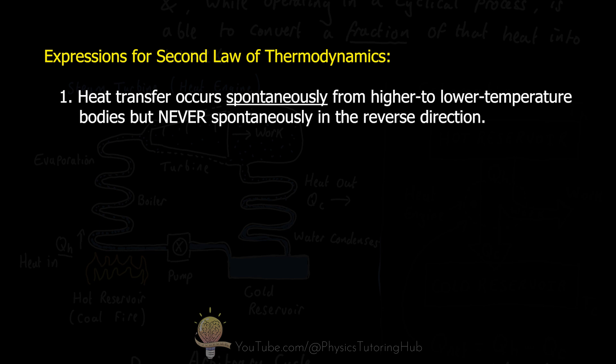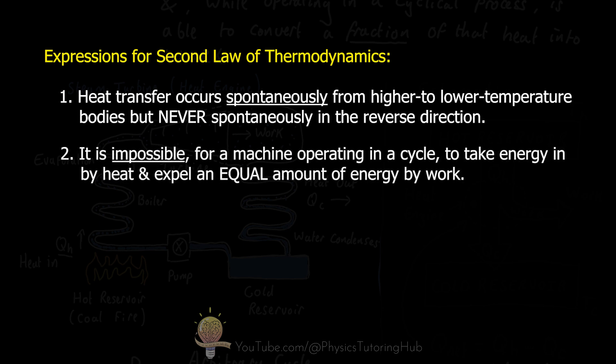Heat engines take advantage of this natural process. Because heat moves from a hotter body — the hot reservoir — to the cold reservoir, heat engines are able to extract some work from this natural process. Another way to express the second law of thermodynamics is that it is impossible for a machine that operates in a cycle — for example a gasoline engine or a steam turbine — to take in energy by heat and expel an equal amount of energy by work. We can never extract all of the energy from the hot reservoir and convert it with 100% efficiency into work.